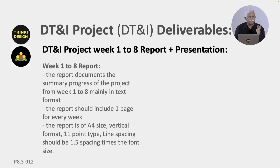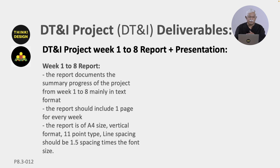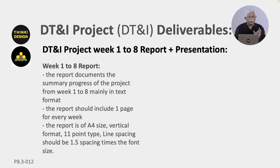The week one to eight report documents the summary of the progress of the project from week one to eight in a text format. It can have visuals, but you need to describe what you have done. It needs roughly just a page per week, so include one page for every week. The report should be of size A4, vertical format, 11-point type, and line spacing should be 1.5.